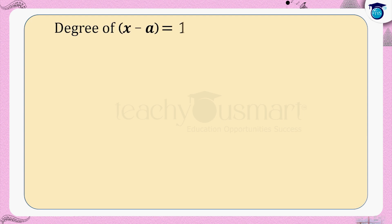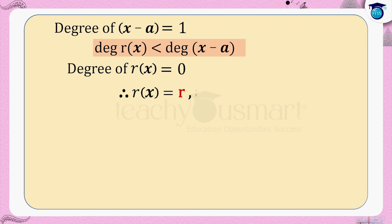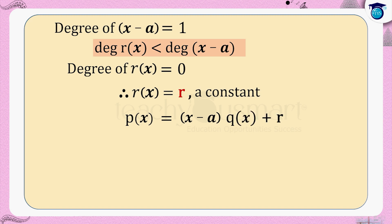We know that the degree of (x − a) equals 1. Since the degree of r(x) is less than the degree of divisor (x − a), the degree of r(x) equals 0. Therefore r(x) can be taken as a constant r. Hence p(x) = (x − a) × q(x) + r. But by the remainder theorem, r = p(a).